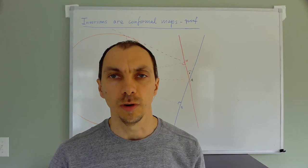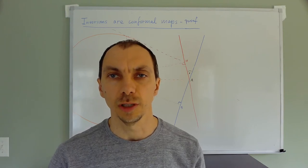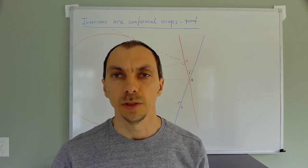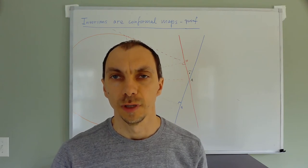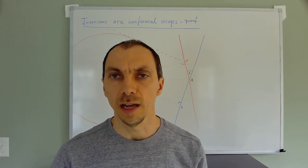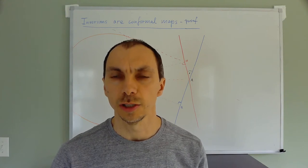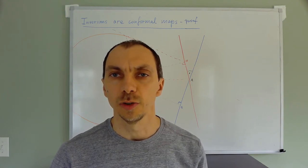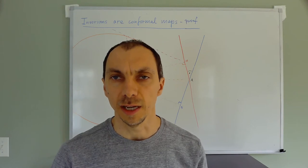However, we're not going to go through all the cases or try to do the most general situation. I'm going to show you how to prove that if you take two lines that intersect at an angle alpha, you're going to get two circles whose tangent lines intersect at the same angle.